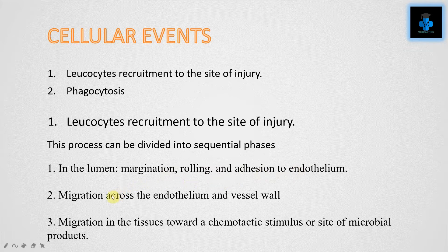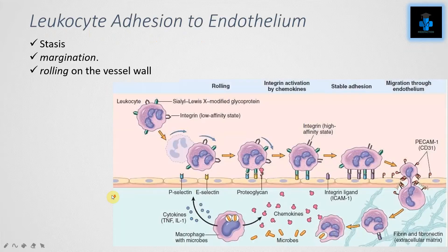After margination and rolling, migration across the endothelium and vessel wall takes place, followed by migration in the tissues toward a chemotactic stimulus or site of microbial products. Let's see in detail about leukocyte adhesion to the endothelium.